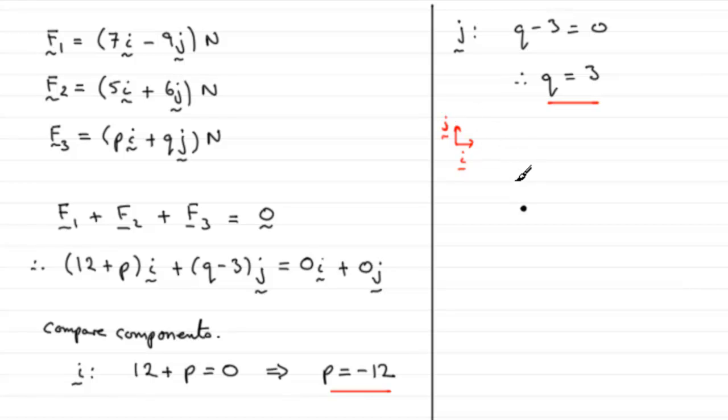7i minus 9j would be 7 units out this way, 9 units down. So we've got something looking like this, a force going down like that. That would be F1. It's not drawn to scale but it's just to give you an idea.